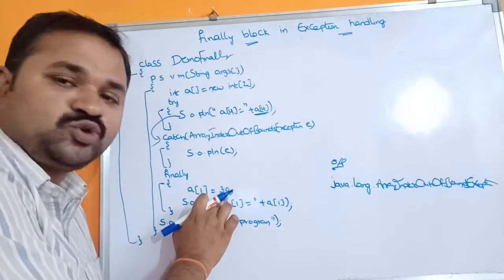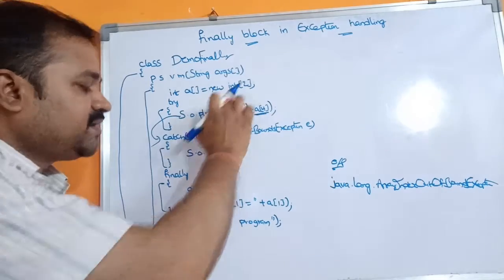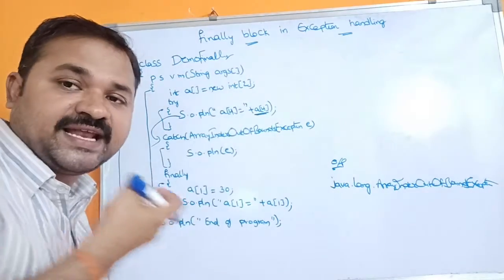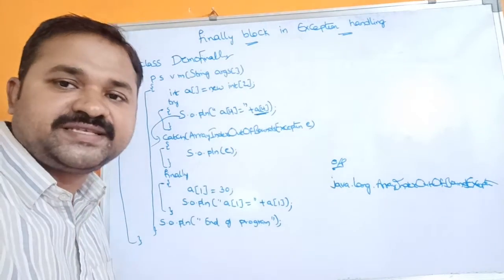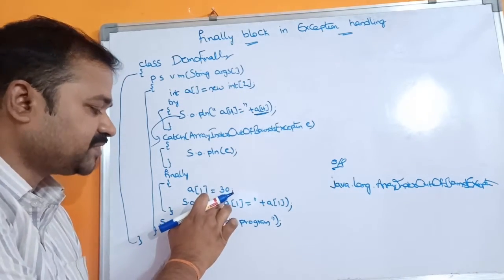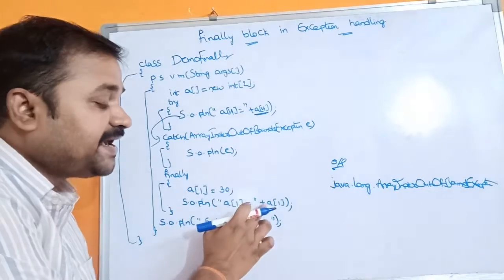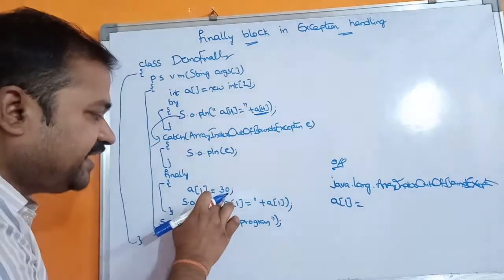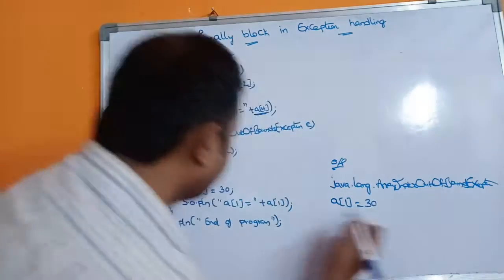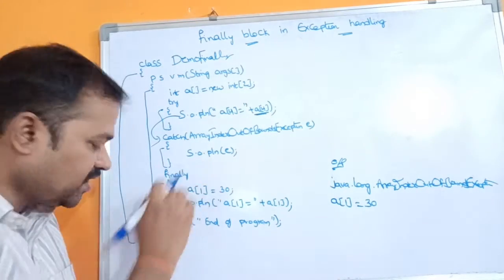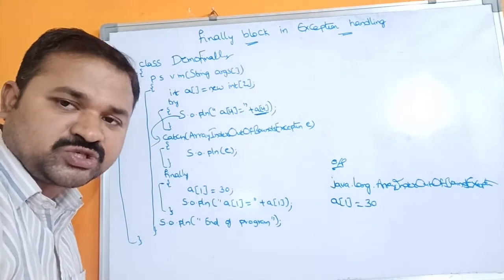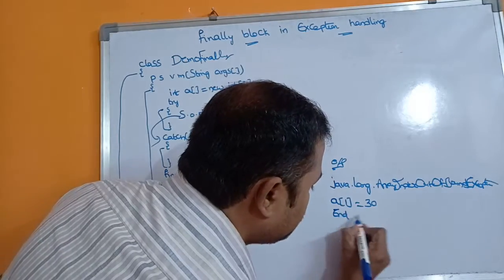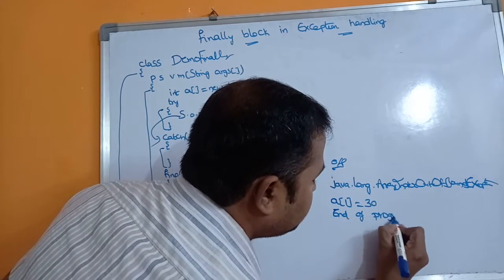Inside the finally block, a[1] is equal to 30. Memory is allocated for a[0] and a[1], so there is no problem. Next, System.out.println(a[1]) prints a[1] which is 30. After executing the finally block, any remaining statements are executed, so System.out.println('end of program') prints 'end of program'.